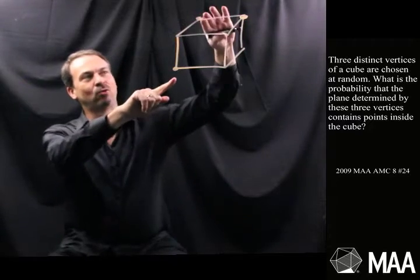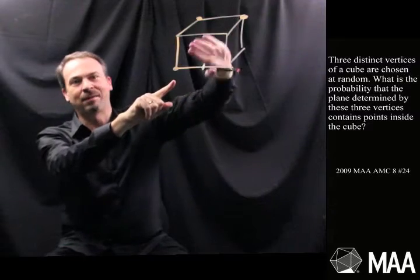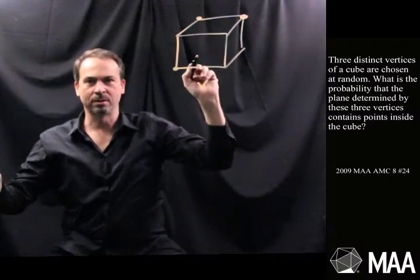So actually, yeah, if I draw the plane that goes through these vertices, I'm not going to try to draw it, it's going to be a real mess, but I can see that plane is definitely going to cut through the cube, go through the inside. So that's something the question wants.